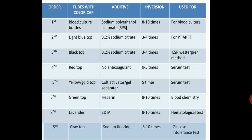Third is the black top tube, which is used for ESR by the Westergren method. It contains 3.2% sodium citrate and inversion is done 3 to 4 times.